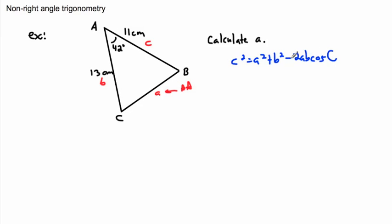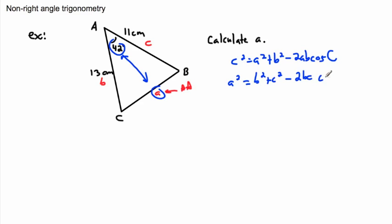Cosine law is normally written as c squared equals a squared plus b squared minus 2ab cos C, but it works for any orientation. Since I want side a, I rewrite it as: a squared equals b squared plus c squared minus 2bc cosine of angle A. Alternatively, you can just rename the sides to match the standard formula.